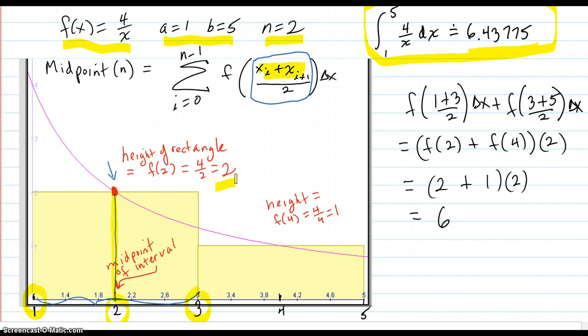Then you'd move on to your second sub-interval, which is 3 to 5 over here. And realize that your midpoint is 3 plus 5 divided by 2.